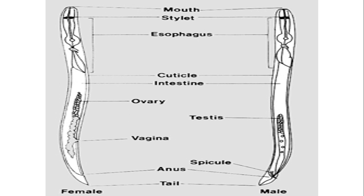Looking further at the morphology, they have a mouth at one end and a stylet — a needle-like structure used to feed and puncture host plants — followed by the gut and cuticle on the outside and the intestine. They also have reproductive organs: ovaries in females and testes in males. At the other end they have the anus and tail.